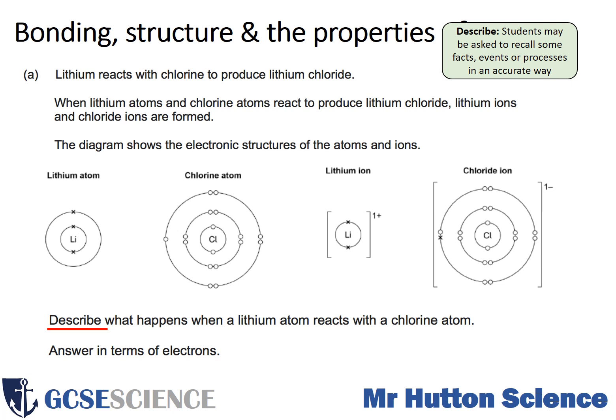You've got the diagrams there to help you. Consider what has happened in terms of electrons from one diagram to the other — how the lithium atoms have become lithium ions and how the chlorine atoms have become chloride ions. Pause the video, try to answer the question, and then look at the mark scheme.